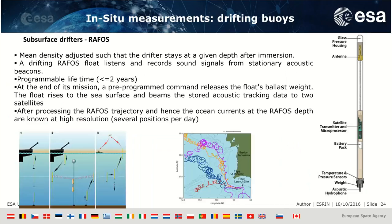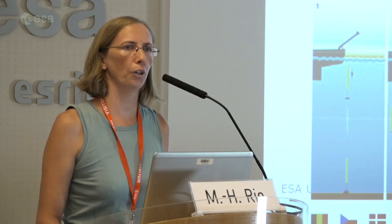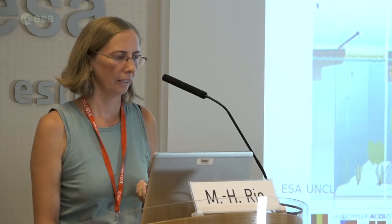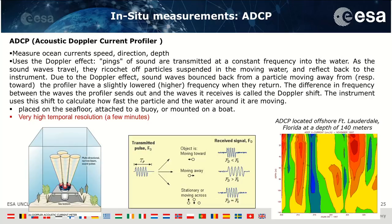The subsurface RAFOS drifter velocities also measure the full total current. Another way to measure currents is the Acoustic Doppler Current Profiler — the ADCP — an Eulerian measurement that does not include Stokes drift. It uses the Doppler effect: pings of sound are transmitted at constant frequency into the water, ricocheting off particles in the moving water and reflecting back. Due to the Doppler effect, sound bounced from particles moving away or toward the profiler has a slightly lower or higher frequency. This Doppler shift allows calculation of how fast the water is moving.